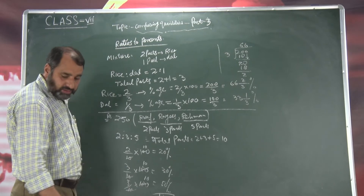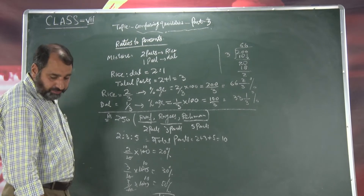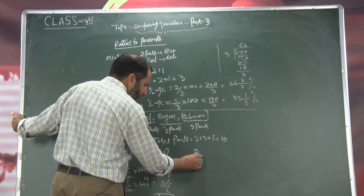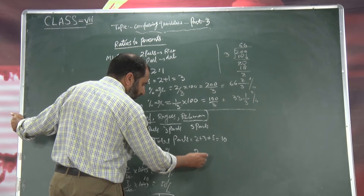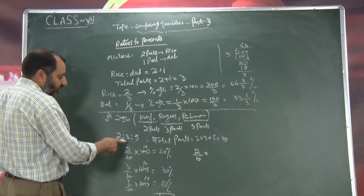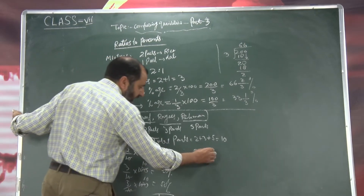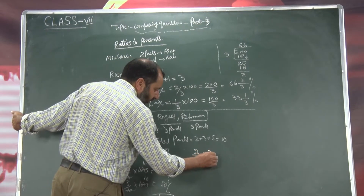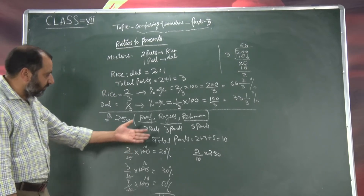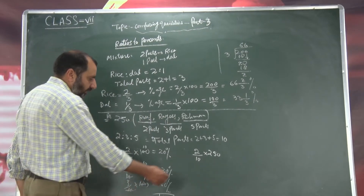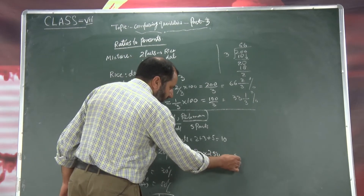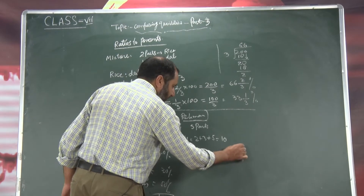To amount means — it means two divide by 10, choonki two parts ne liye hai, total parts 10. Two divide by 10 into two hundred fifty — yahaan zero and zero cancel, five twos are fifty. To fifty rupees Roof leta hai.